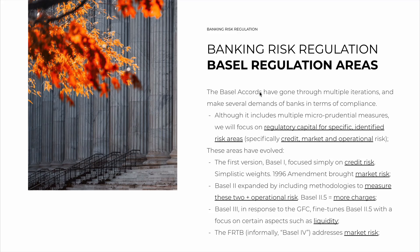The Basel Accords have gone through multiple iterations, and they make several demands of banks in terms of microprudential compliance. Although they include multiple microprudential measures, including possibly leverage ratios, liquidity ratios, and so on, we are going to focus specifically on regulatory capital for specific and identified risk areas — that is, capital set aside as a cushion to protect against loss events from those risks.